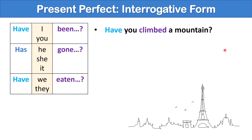For example, have you climbed a mountain? We also can ask questions with the present perfect using the word ever. Have you ever climbed a mountain? Again, these sentences are basically the same. But when you use the word ever, it really emphasizes that you're asking about the person's entire life up until now.